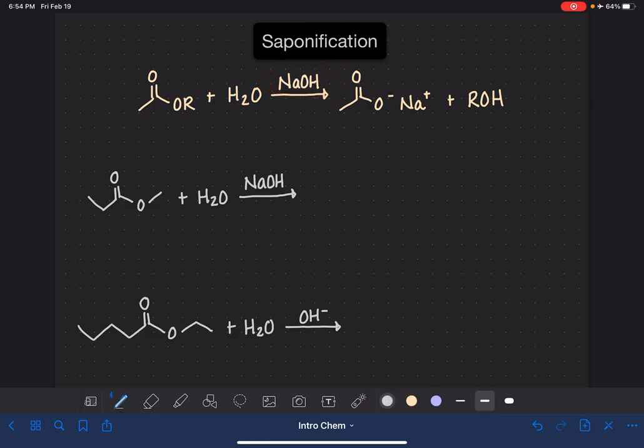Now, in the saponification reaction, you could be using KOH instead of NaOH. If that were the case, then you would just replace the Na with potassium instead.